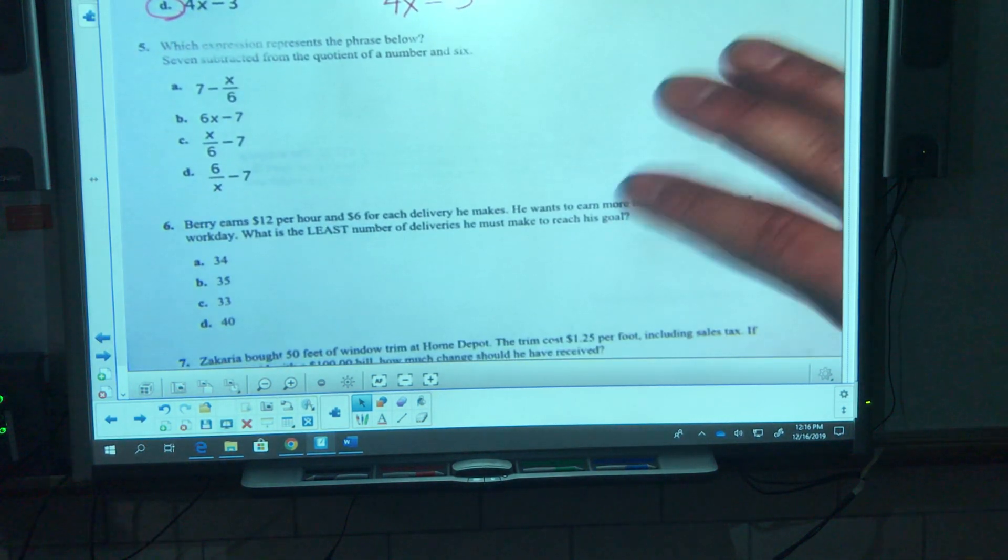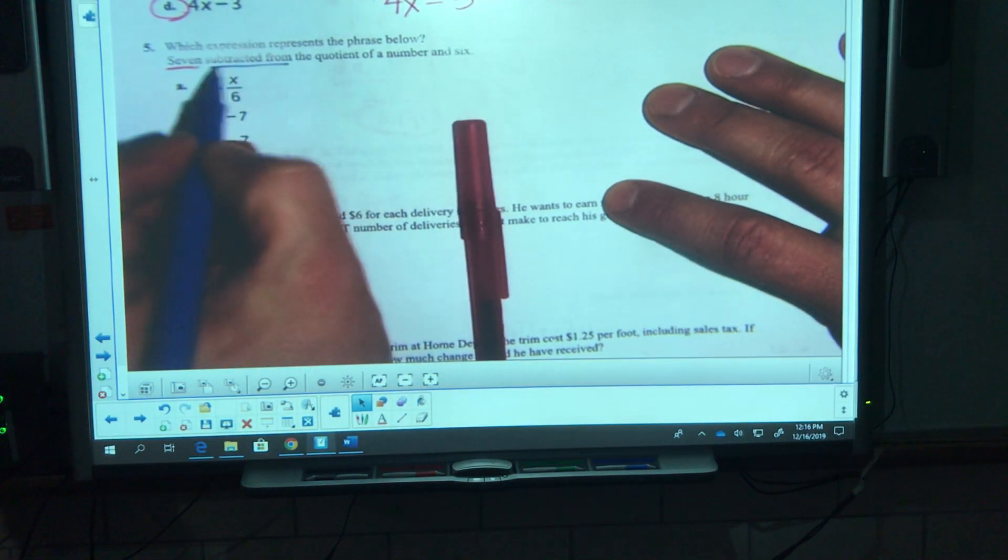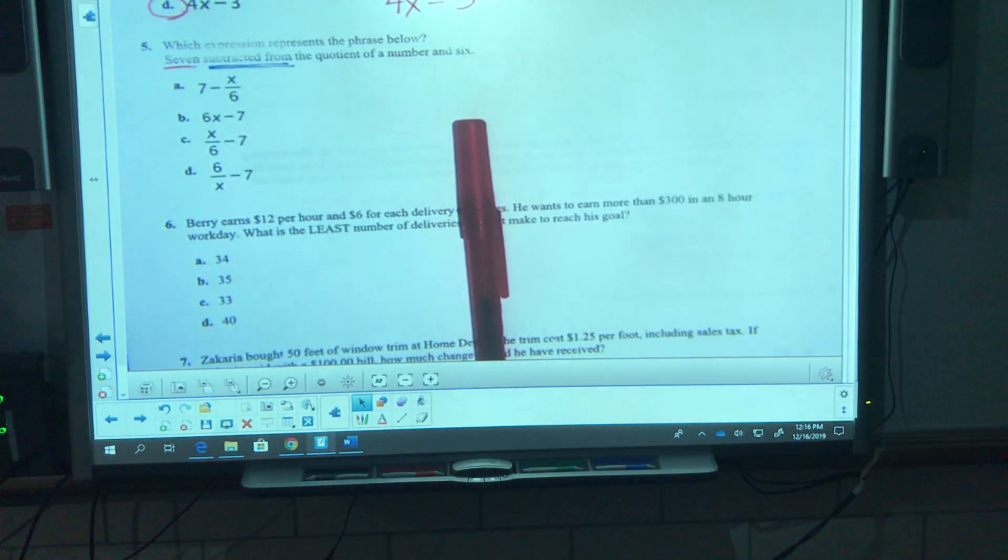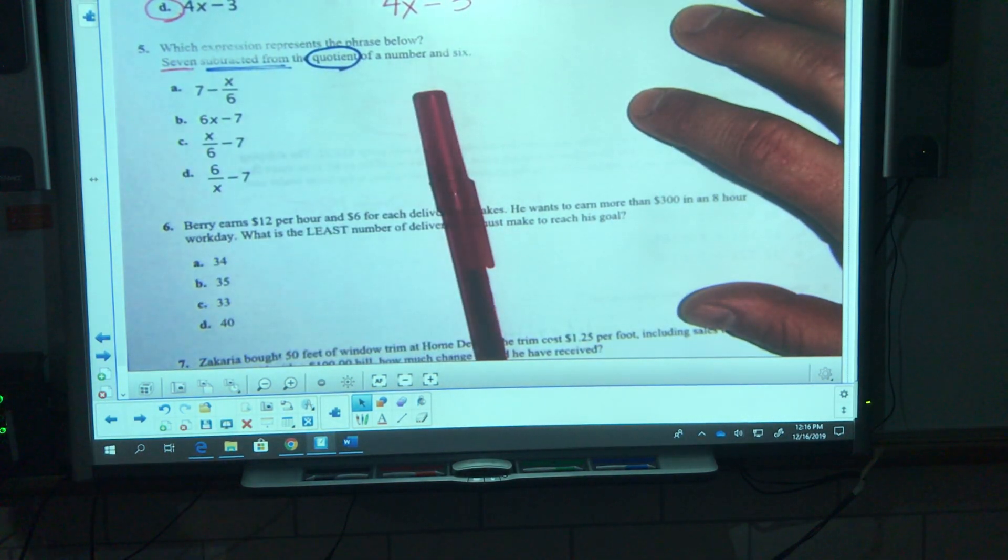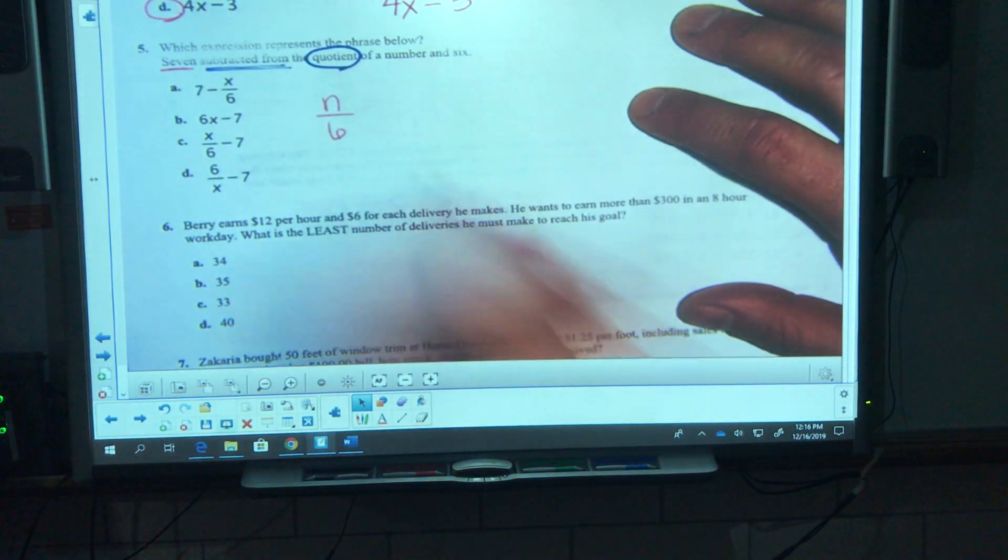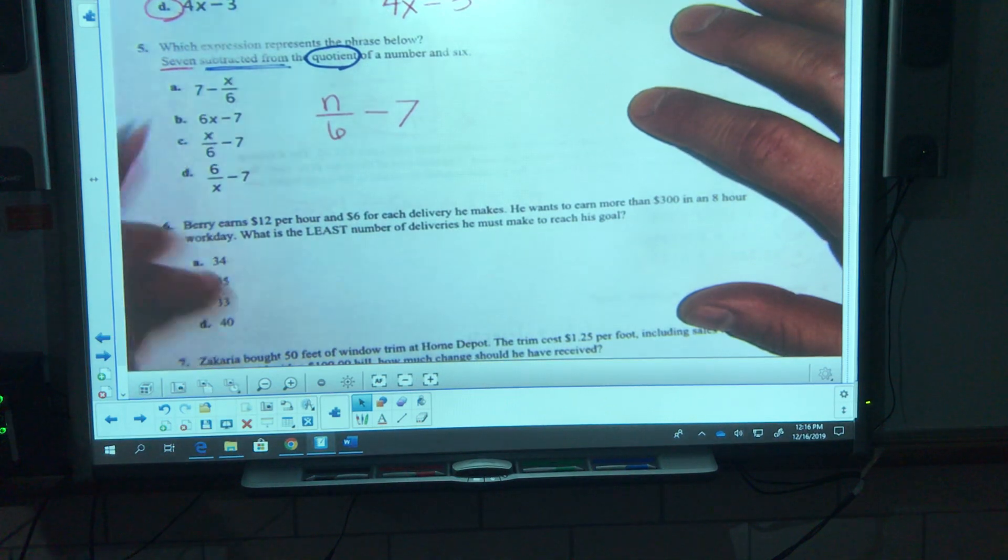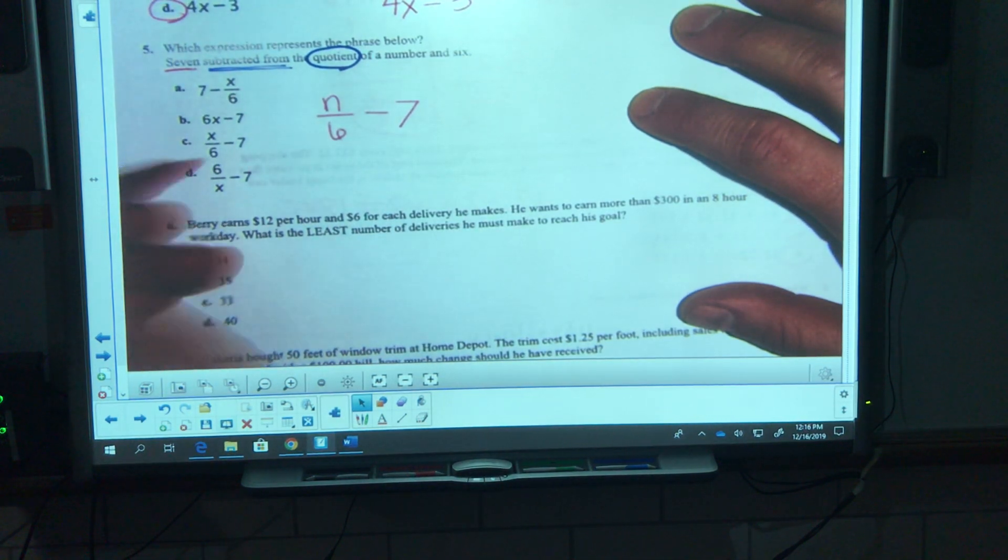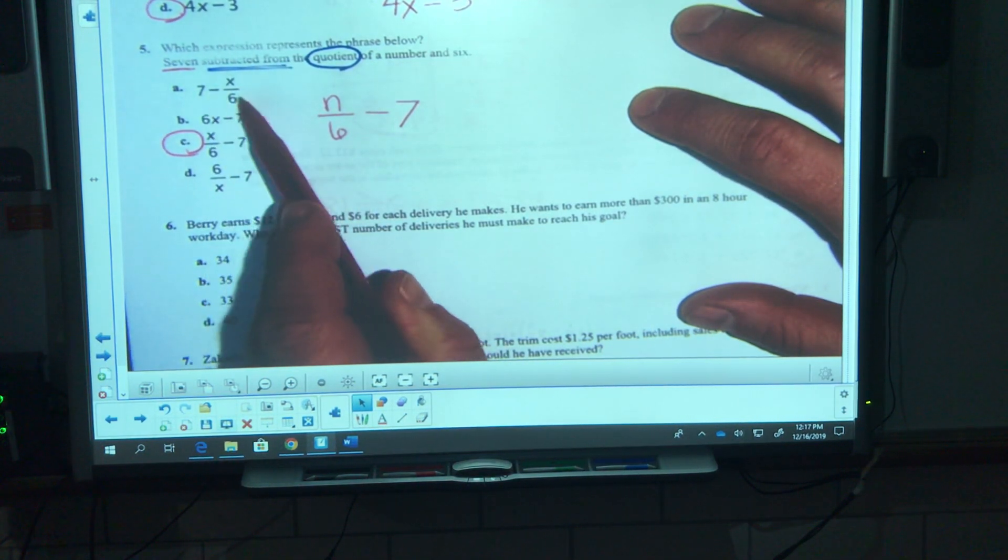Number 5, which expression represents the phrase below: 7 subtracted from the quotient of a number and 6. That means the 7 is gonna go in the second spot, right? 7 is getting subtracted from the quotient of a number and 6. The quotient of a number and 6 is division, and from that I am gonna subtract 7. The only option that gives that to me is C.